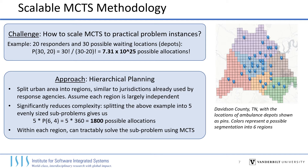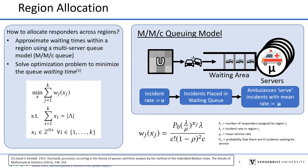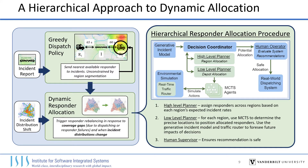One challenge when doing this is to determine how to assign responders to each region, since real regions are heterogeneous. For example, in this region segmentation of Nashville, the blue region covers the downtown area and sees more incidents than the other regions, and should be assigned more responders accordingly. To address this, we model each region as a queue, where incidents are generated at some rate given by our prediction models, and enter a queue to be serviced by ambulances represented as servers. Using the M/M/C queue wait time equation, we can approximate the expected incident response times for a region based on the number of ambulances assigned to it, and then solve an optimization problem that minimizes the sum of expected response times over each region.